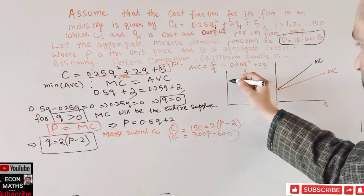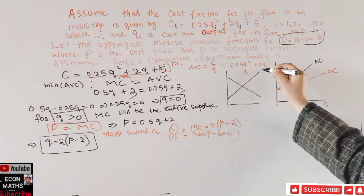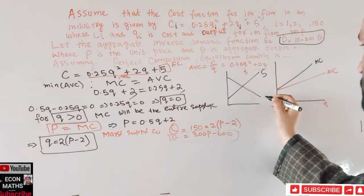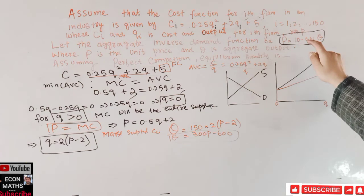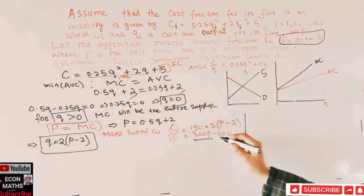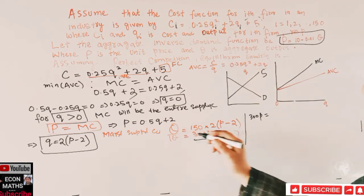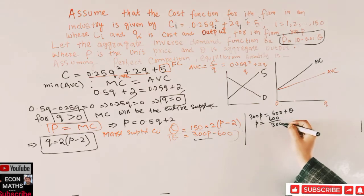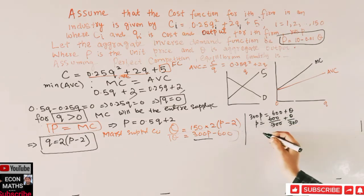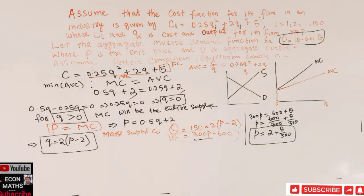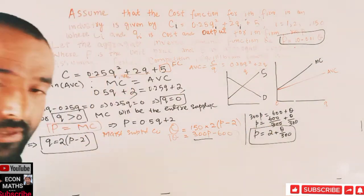Equilibrium occurs where market demand equals market supply. We have the demand function P = 10 − 0.01Q and the supply function Q = 300P − 600. Solving the supply function for P: 300P = 600 + Q, so P = 2 + Q/300.